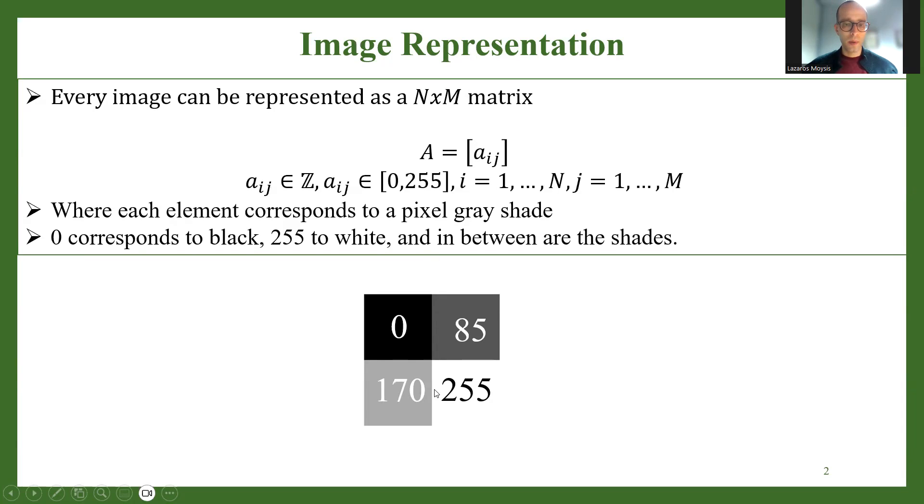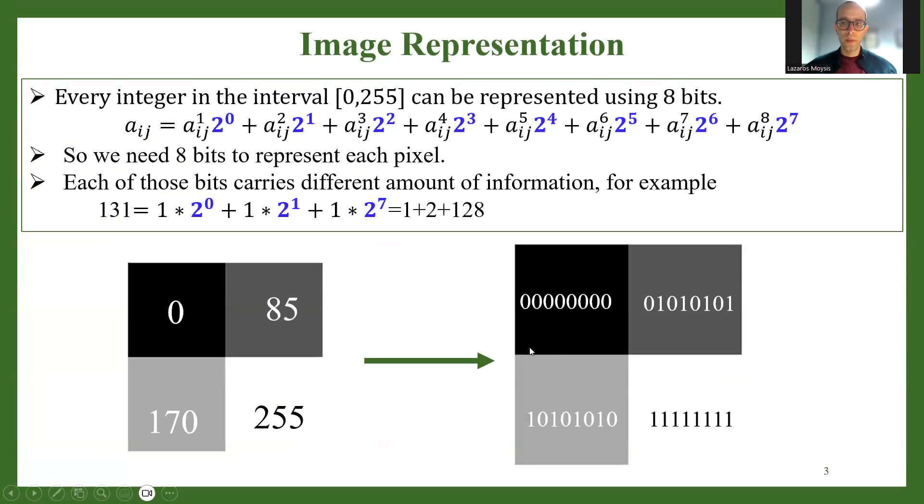So this very simple example here is a 2 by 2 image, a matrix of integer values. We need to think about these integers, 0 to 255. Obviously this is a byte, right? And all integers in this interval can be represented in a binary representation using 8 bits. You don't need any less.